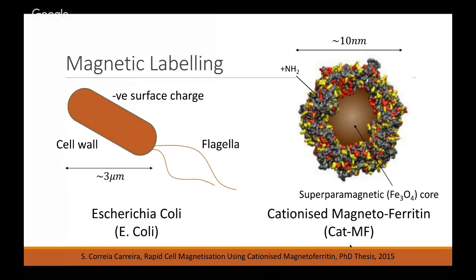That comes about because of the negative surface charge of these cell walls for the bacteria. You're able to functionalize the surface of some magnetic nanoparticles using this positive amine group here, for example. And then these readily attach to the surface of the bacteria. So then you're covering it in lots of these tiny little magnetic balls, superparamagnetic balls that are approximately 10 nanometers in size.